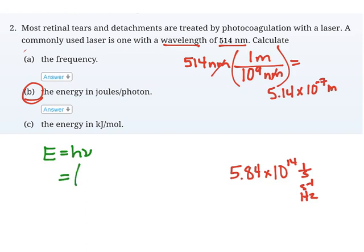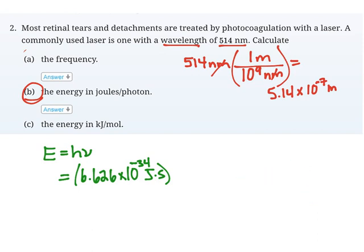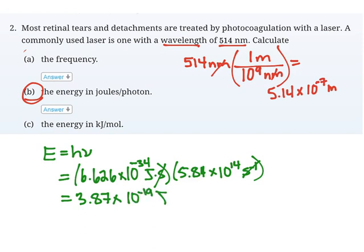So I can solve for the energy by just plugging in Planck's constant, 6.626 times 10 to the negative 34 joules times seconds. And plugging in the frequency that I just found, 5.84 times 10 to the 14 seconds to the minus 1, or 1 over seconds or hertz. I'll notice that seconds cancel out. And when I multiply this in my calculator, I get 3.87 times 10 to the negative 19 joules.